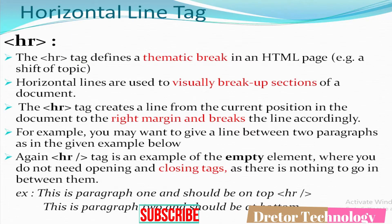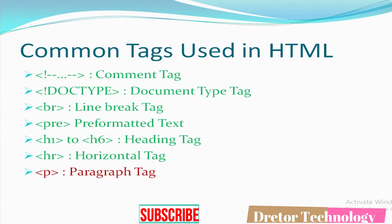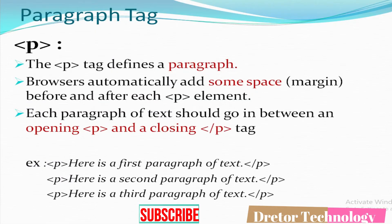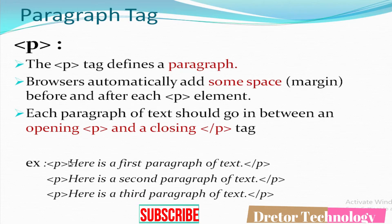The last tag is the paragraph tag. P stands for paragraph. The browser automatically adds some space or margin before and after each P element. It is a pair tag — each paragraph of text should go between an opening and closing P tag. For example: this is a paragraph. Here I am writing three paragraphs — first paragraph, second paragraph, and third paragraph.